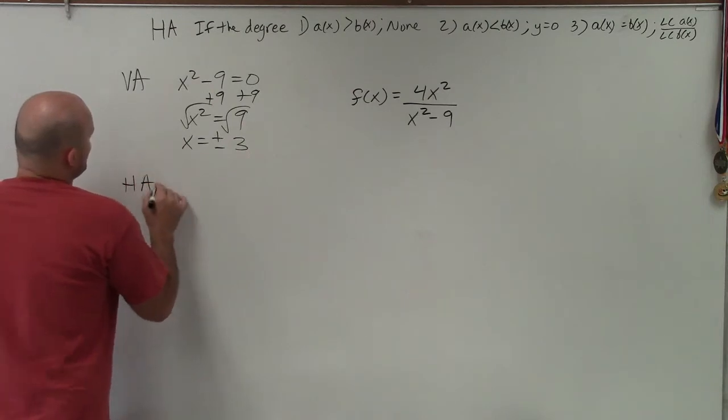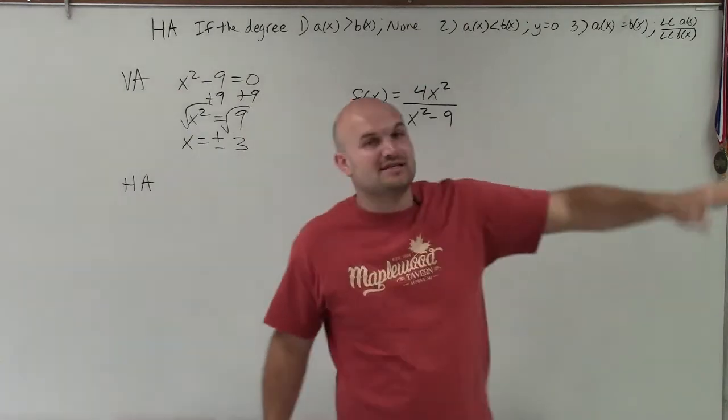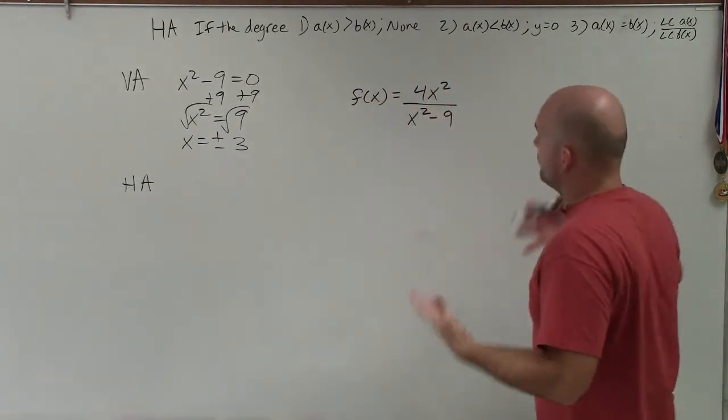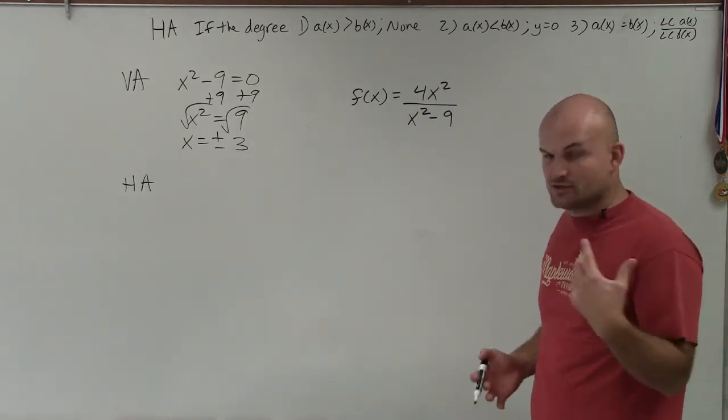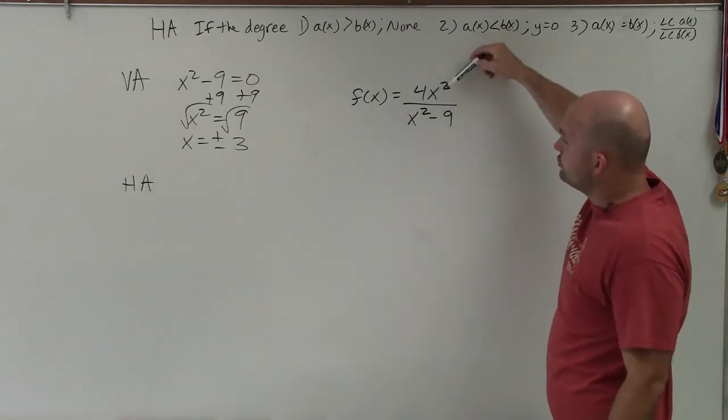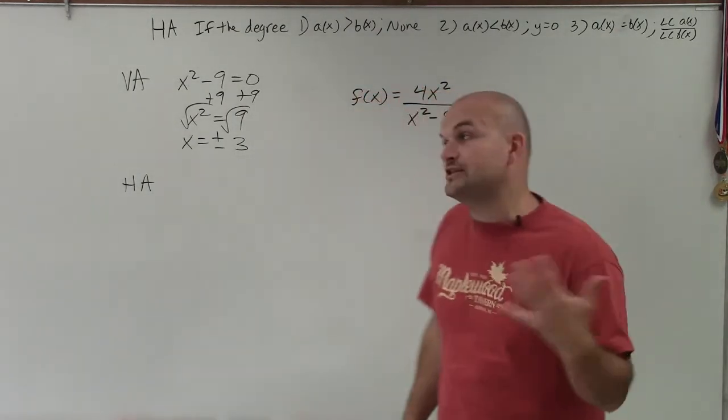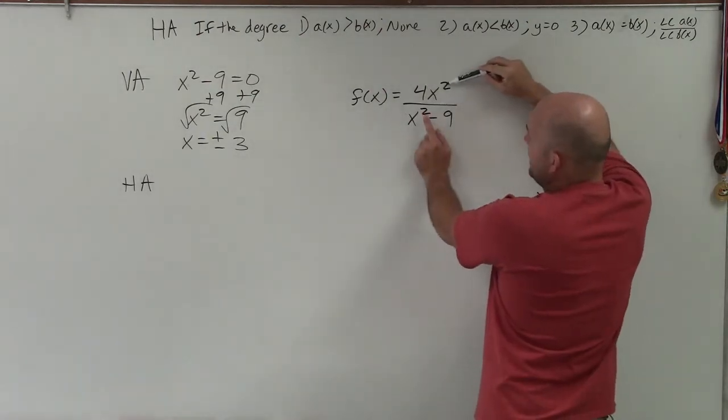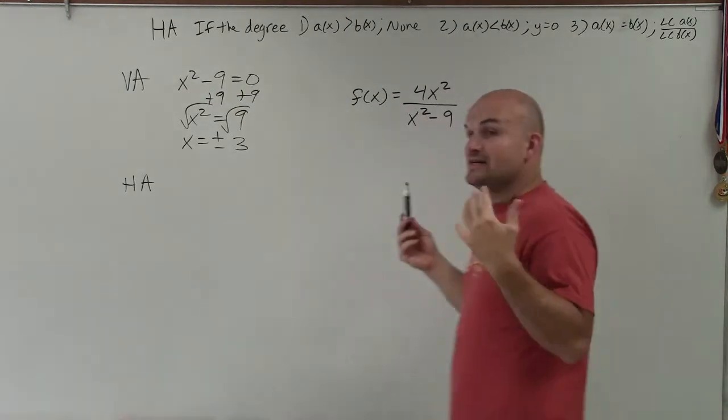Now, when determining the horizontal asymptote, there's the rules. And I kind of wrote up the rules up here, just so you can kind of see them. But I'll go through them again. What we're basically doing when we're looking at the rules is looking at the degrees of the two functions when we're dealing with rational functions. We look at the degree of the numerator and the denominator. Remember, the degree is going to be the largest exponent of each polynomial. So you can see that the degrees are both x², x squared and x squared. So their degrees are the same.